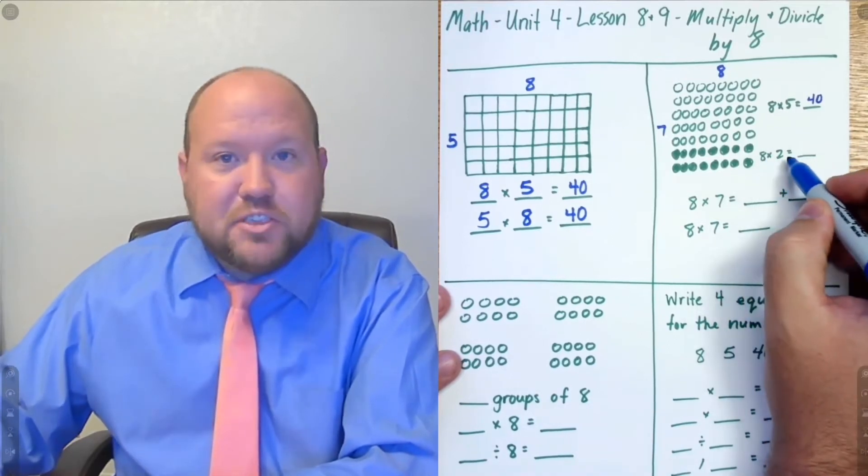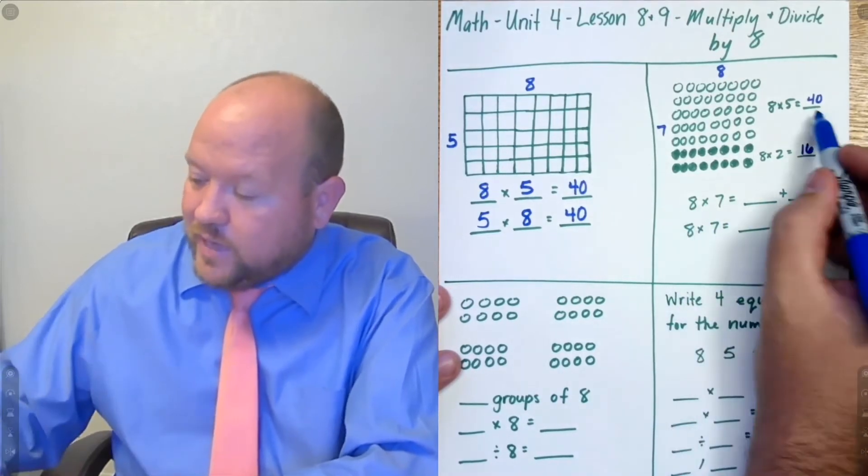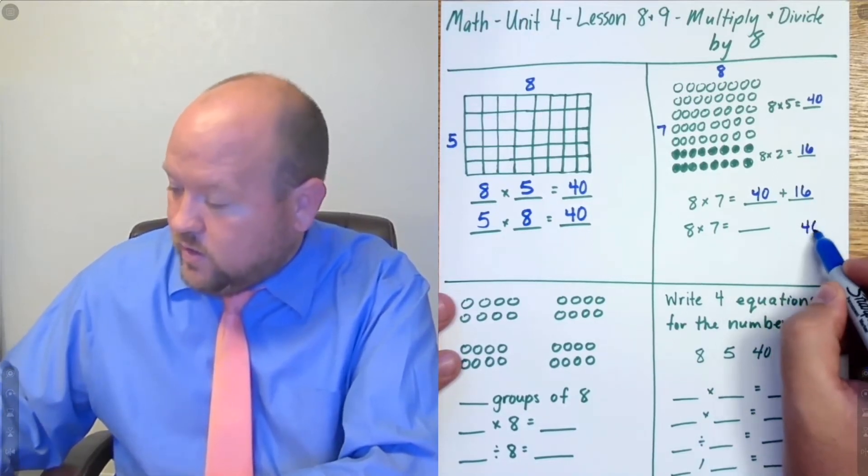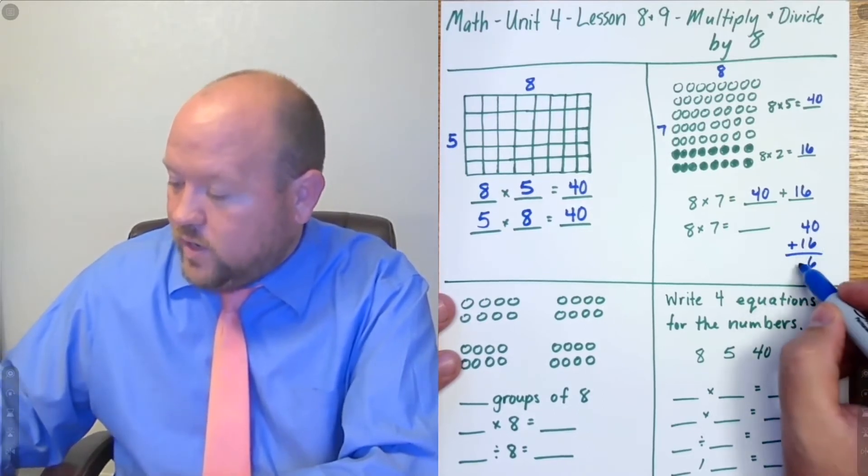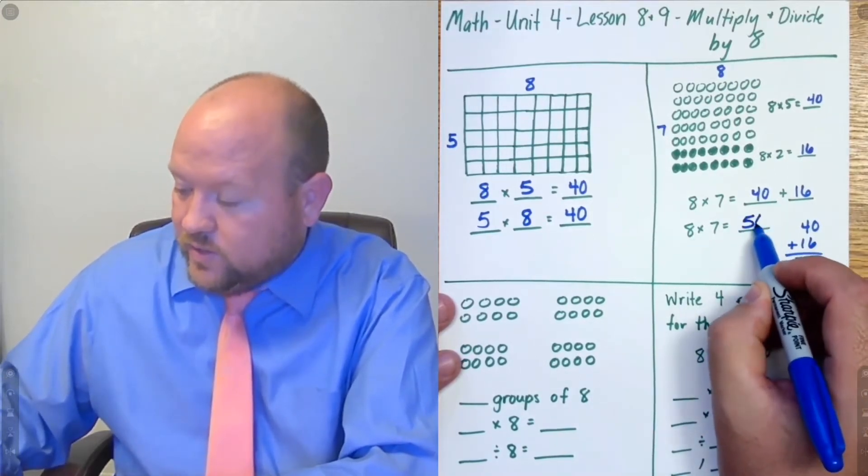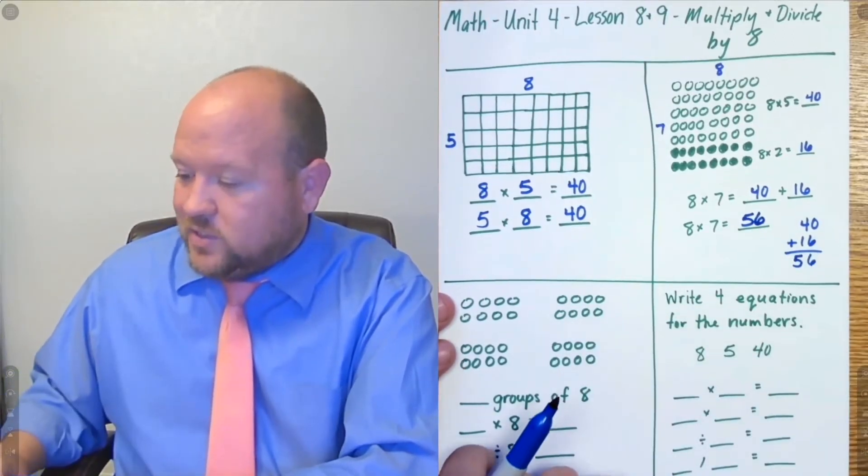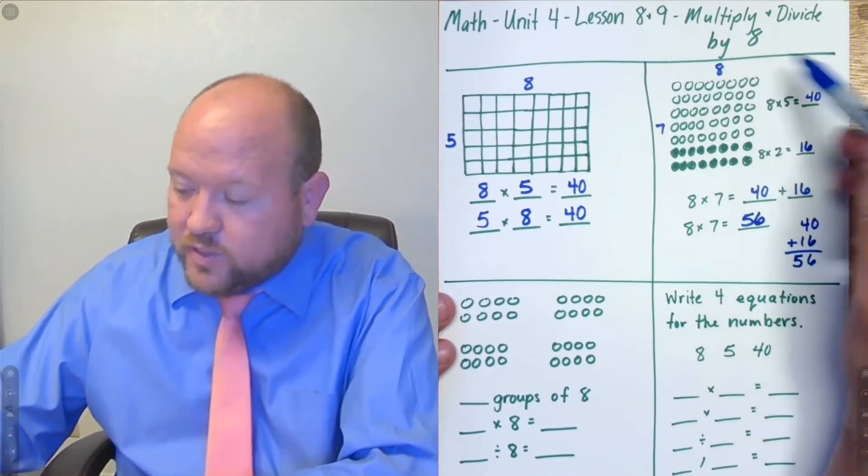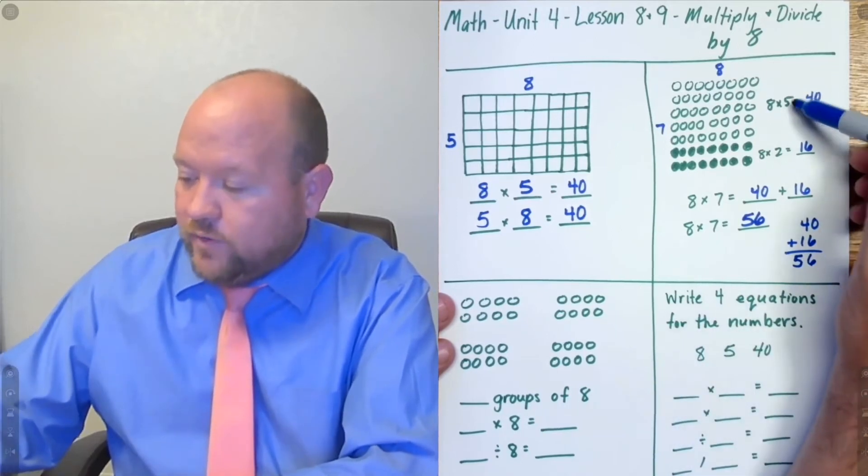Next, we do 8 times 2. 8 times 2 is 16. So that means that 8 times 7 is 40 plus 16. So let's do that over here. 0 plus 6 equals 6. 4 plus 1 equals 5. And that means that 8 times 7 is 56, which we saw this one a bunch in our last lessons when we were looking at the 7s. And so here we can find that answer. So this is a way you can solve this and find the answer if you haven't quite memorized your 7s and your 8s yet, because you should know your 5s and your 2s.